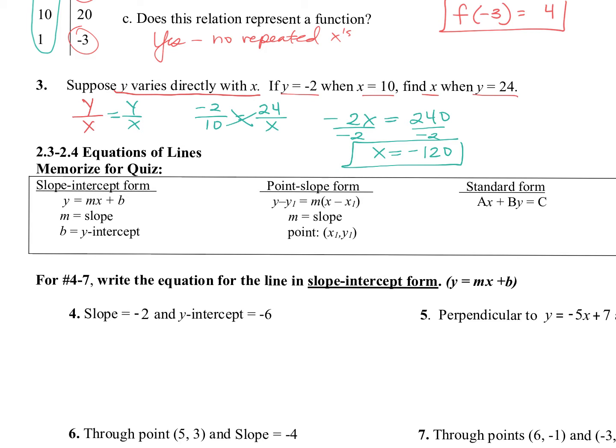We talked about three different forms of equations. You need to know these — we don't put them on the quiz for you. You might see an equation in slope-intercept form, but it's not going to tell you that. So make sure you know what each form looks like. Slope-intercept is y equals mx plus b. Point-slope is y minus y1 equals m times x minus x1. And standard is ax plus by equals c.